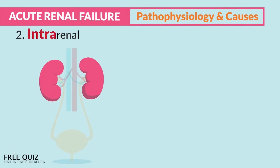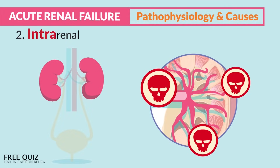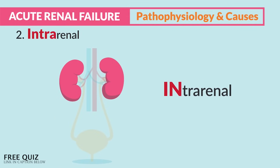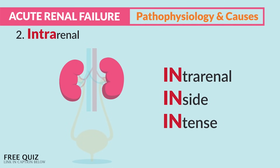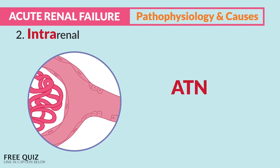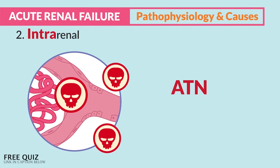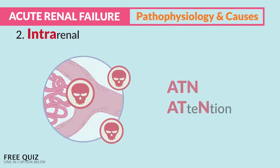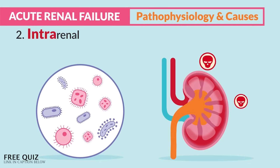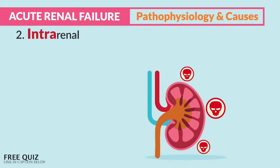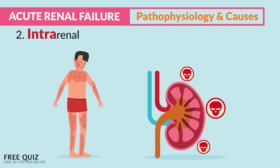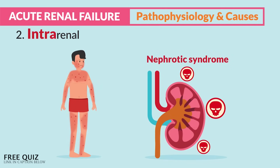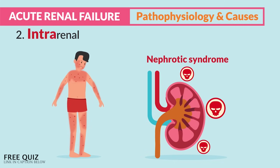Intra-renal is direct damage inside the kidney itself — think 'intra-renal' for inside the renal. This is far more serious because it's more intense. It's also referred to as ATN — acute tubular necrosis — so think ATN requires immediate attention. It's typically caused by infections resulting from glomerulonephritis or even autoimmune diseases like lupus, where the body attacks itself, resulting in nephrotic syndrome.